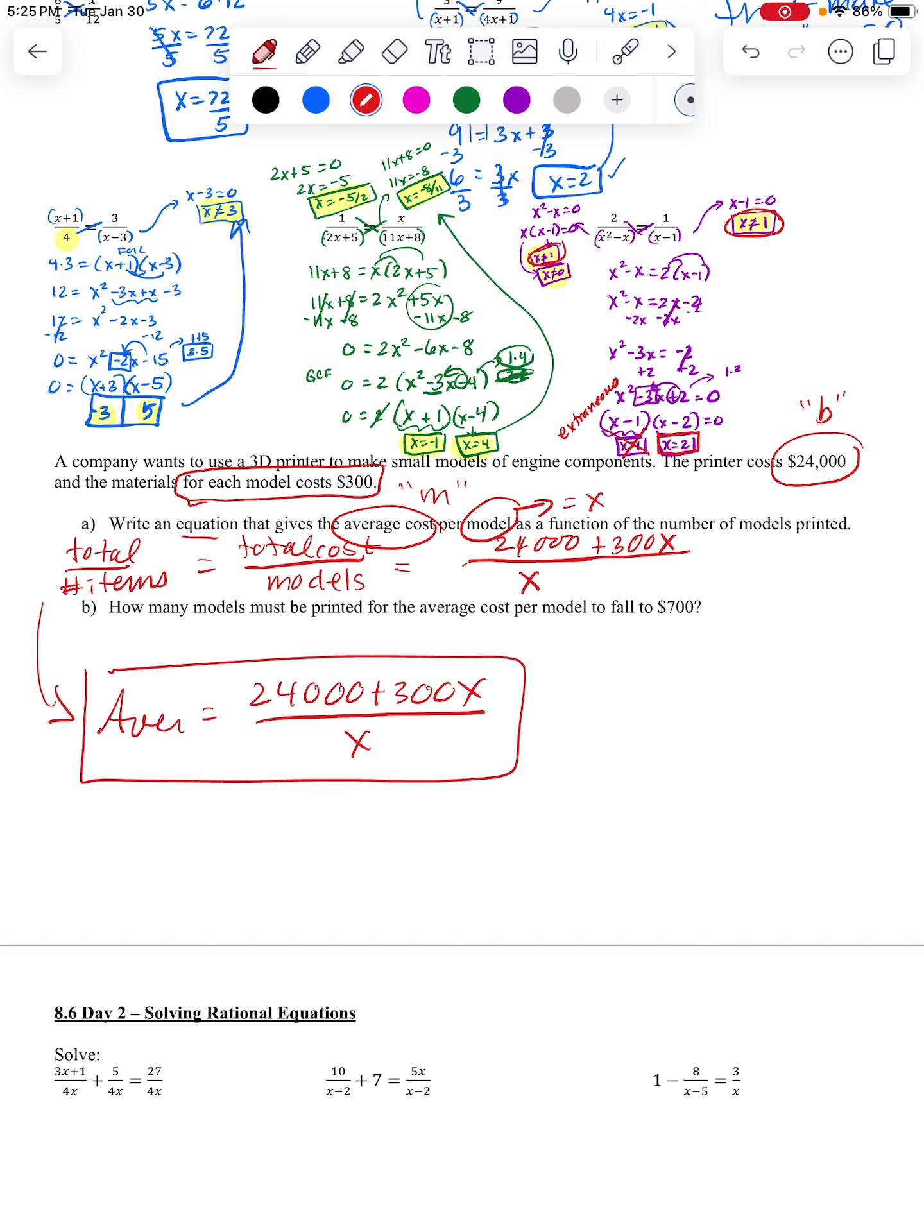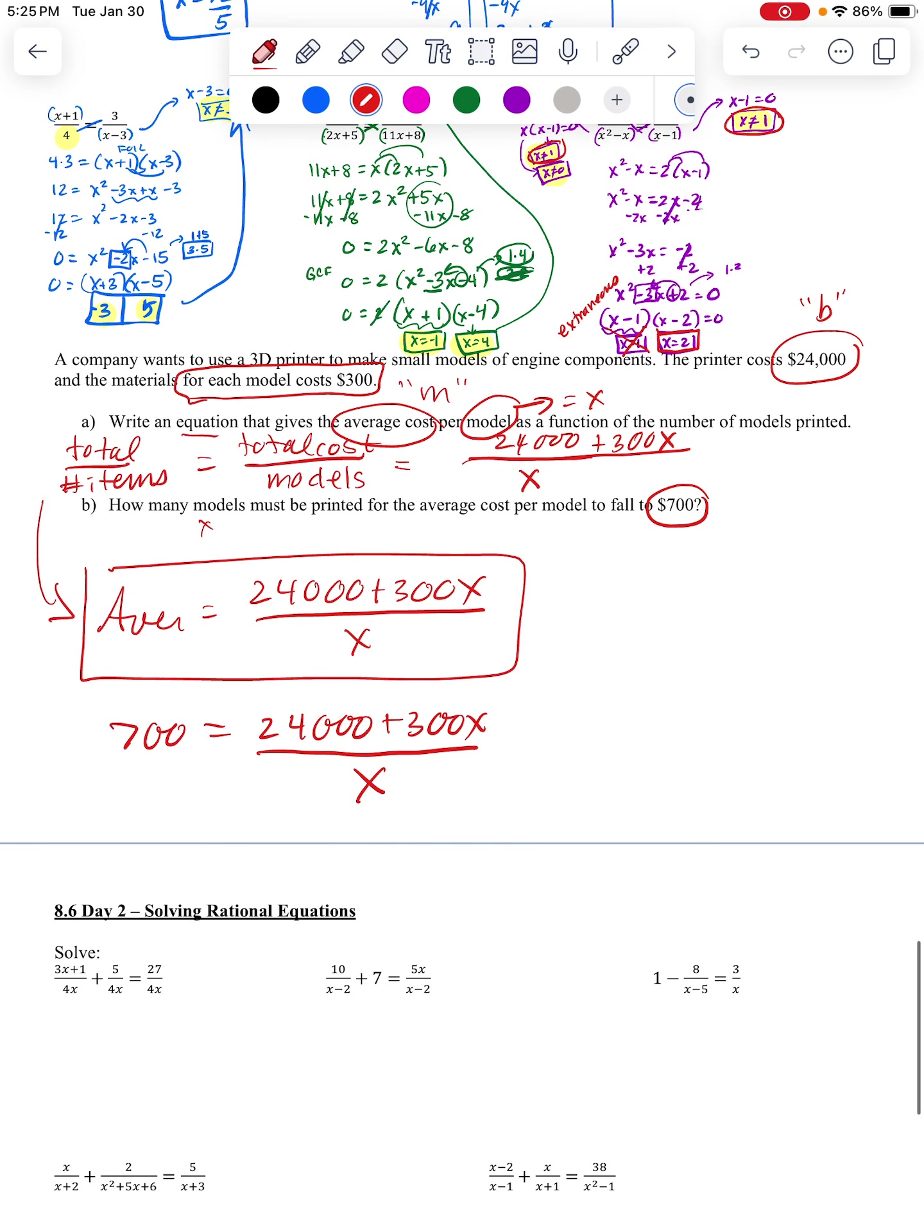But then the second one says how many models, meaning X, must be printed for the average cost to be $700. So now I'm going to have $700 equals this. And now Dolly's going to play with a squeaky toy. Now, we've been doing cross-multiplying. So to me, it makes sense that I'm going to do this with cross-multiplying. So I'm going to think of this $700 as being over 1.